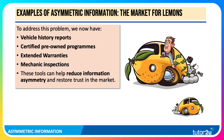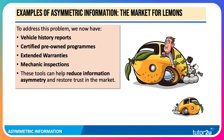To address the problem — and this theory is now over 50 years old — there have been many interventions in the second-hand car market. Buyers now have access to vehicle history reports, certified pre-owned programmes including MOT histories, extended warranties as a form of insurance if the car breaks down, and full mechanical inspections with 100 or 200 diagnostic tests which can be done before a used car is put on the market. These tools help reduce information asymmetry and restore a degree of trust. But buyer beware — there is always some asymmetry in this kind of second-hand market.